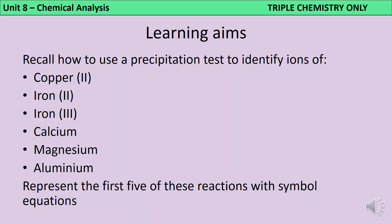By the end of this video you should know how to use sodium hydroxide or another source of hydroxide ions to identify copper 2 plus ions, iron 2 plus ions, iron 3 plus ions, and calcium, magnesium, and aluminium ions. You should also know how to write the symbol equations for the first five of these reactions.